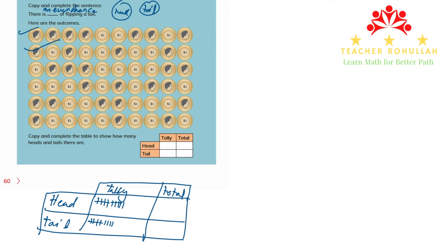For the third student, we have five heads and five tails. I record five tally marks for heads and five tally marks for tails. Five tails — we are done with the third student.